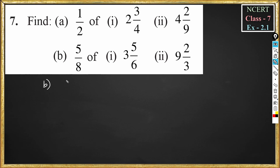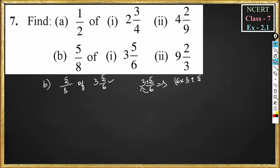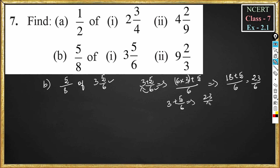Now problem number B: 5 by 8 of 3 and 5 by 6. We should convert this into an improper fraction. So 3 and 5 by 6 can be written as 6 into 3 plus 5, divided by 6. This becomes 18 plus 5, divided by 6, which equals 23 by 6. You could also add 3 plus 5 by 6, which also gives 23 by 6.